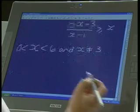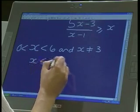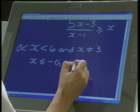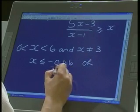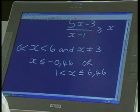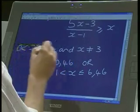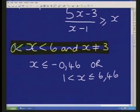If we look at the second inequality, the solution there is X less than or equal to minus 0.46, or 1 less than X less than or equal to 6.46. And now what we have to do is take the one solution, which we're going to highlight in yellow. There you go. And we're going to take the other solution, which we're going to highlight in lime green.